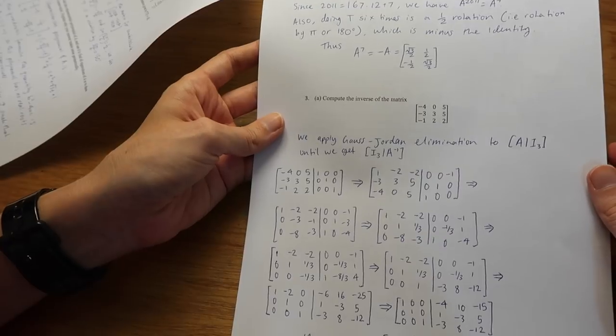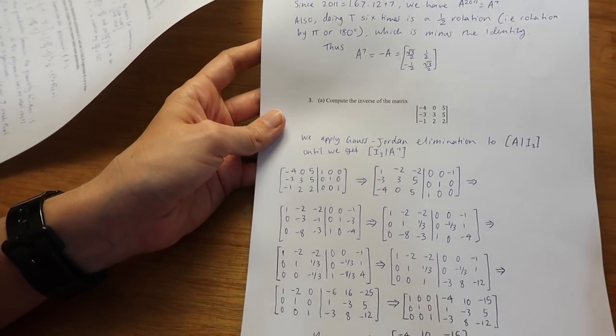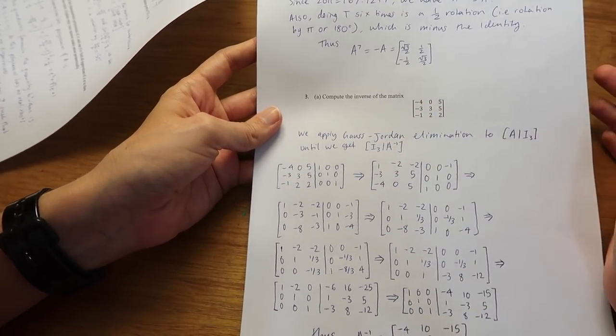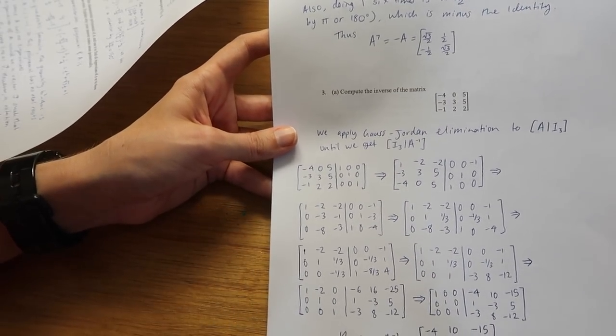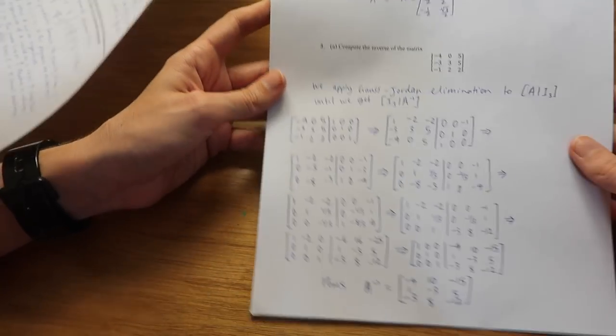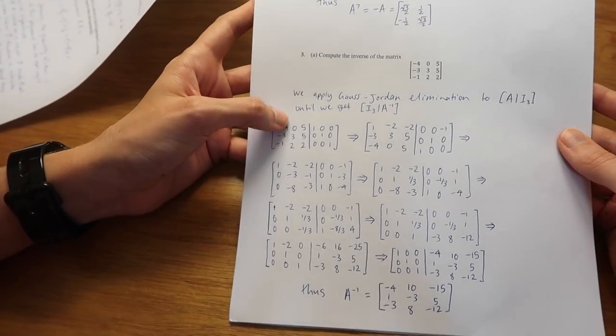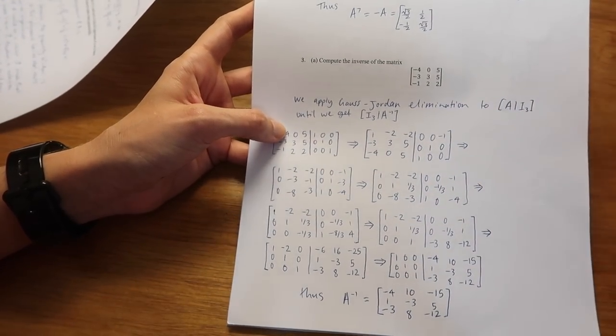Then we're asked to create or find the inverse of a matrix and this is our matrix here. The way that we're going to find the inverse is by doing Gauss-Jordan elimination which essentially means we're going to do a whole bunch of operations on the rows in the matrix.